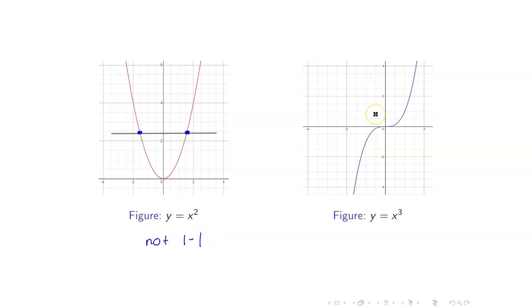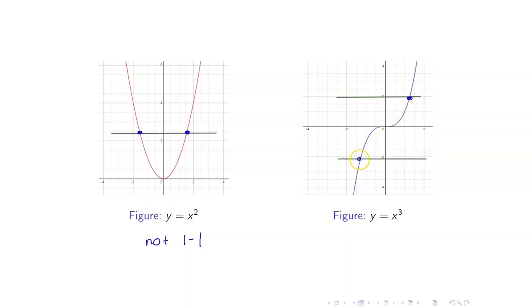What about y = x³? If I draw any horizontal line, it will always intersect the graph at exactly one point. So therefore, this is one-to-one.